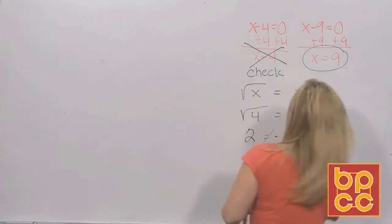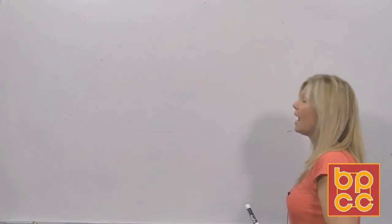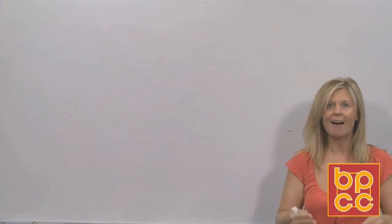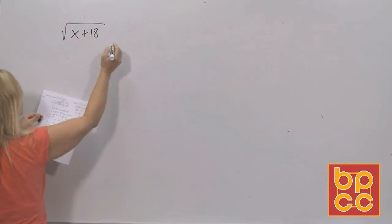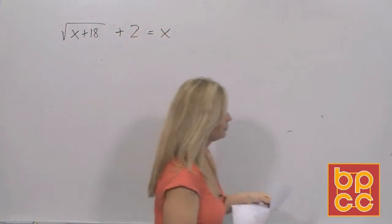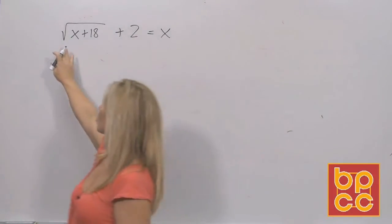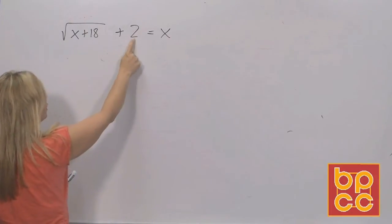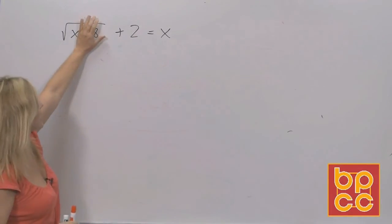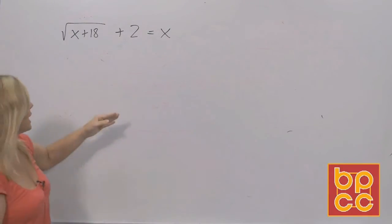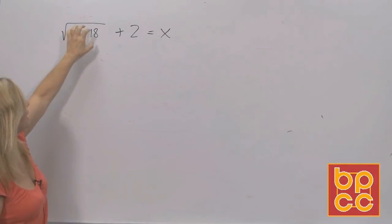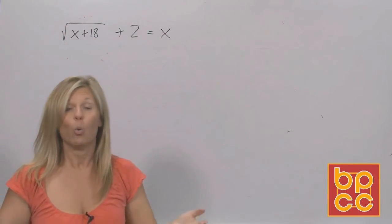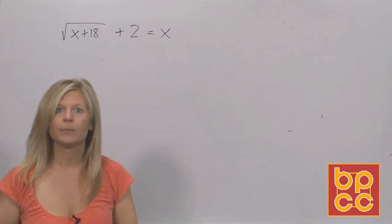It is very easy in college algebra to make a small mistake and be totally off — you have to be very careful with details. Here's our other radical equation: square root of x plus 18 plus 2 equals x. You cannot take this 2 and add it to the 18 because the 18 is inside the symbol and the 2 is not. Same thing — you can't combine the x inside the symbol with the x outside. The x plus 18 is stuck in the symbol, stuck in a house on fire.